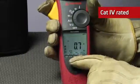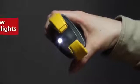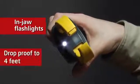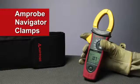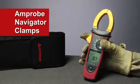The rugged Cat4 rated units are also equipped with in-jaw flashlights and are drop-proof to four feet. Everything you need to take control of your commercial and industrial environments.